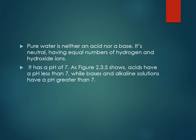Pure water has a pH of 7. Acids have a pH of less than 7, while bases and alkaline solutions have a pH greater than 7. The pH is the negative log of the concentration of hydrogen ions. So if the concentration of the neutral solution is 10 to the minus 7, then the pH is the negative of that index — the index being negative 7, so the negative of that is 7.